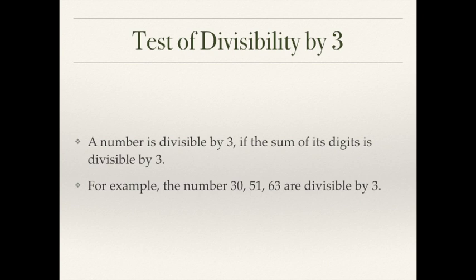Coming to divisibility by 3: a number is divisible by 3 if the sum of its digits is divisible by 3. For example, take 30 — it has 2 digits, 3 and 0. Add them: 3 plus 0 equals 3, and 3 is divisible by 3, so 30 is also divisible by 3. Now take 63: 6 plus 3 is 9, which is a multiple of 3, hence 63 is also divisible by 3. It's pretty simple, and you can try it with large numbers.